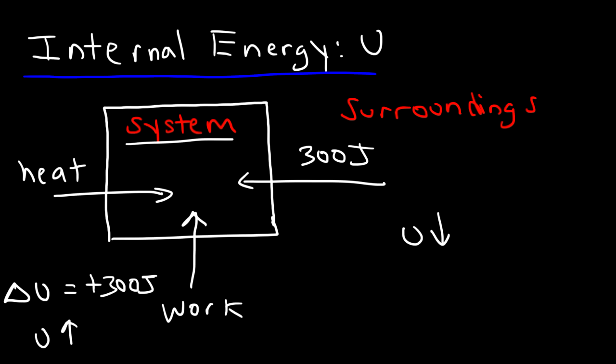Energy follows that same principle. Under practical conditions, energy is simply transferred from one place to another. If the system gains 300 joules, the surroundings lose 300 joules. If the system loses 500 joules, the surroundings gain 500 joules. In that sense, energy is not created or destroyed — and thus we have the first law of thermodynamics.